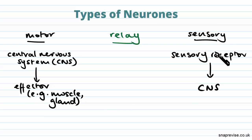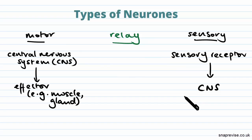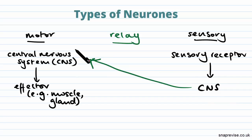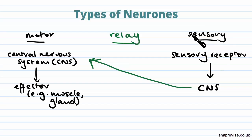Sensory neurons carry electrical impulses from sensory receptors to the central nervous system. Relay neurons essentially connect sensory to motor neurons, usually in the central nervous system — that's where you'll find them most at A-level, especially in reflex arcs, which basically bypass the brain. Reflexes are where sensory inputs or stimuli directly affect an action.